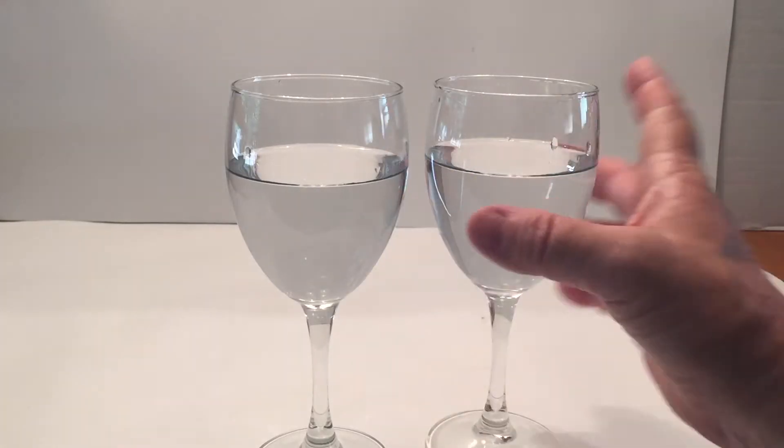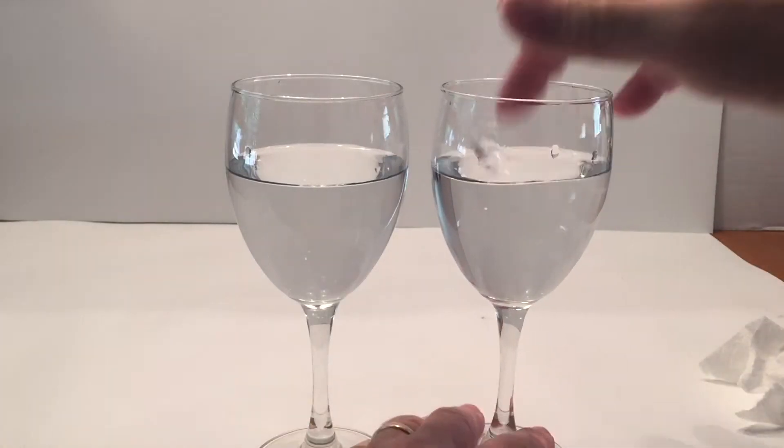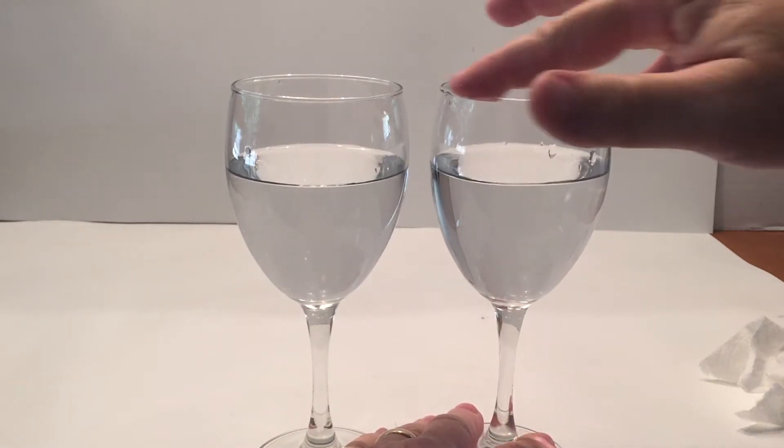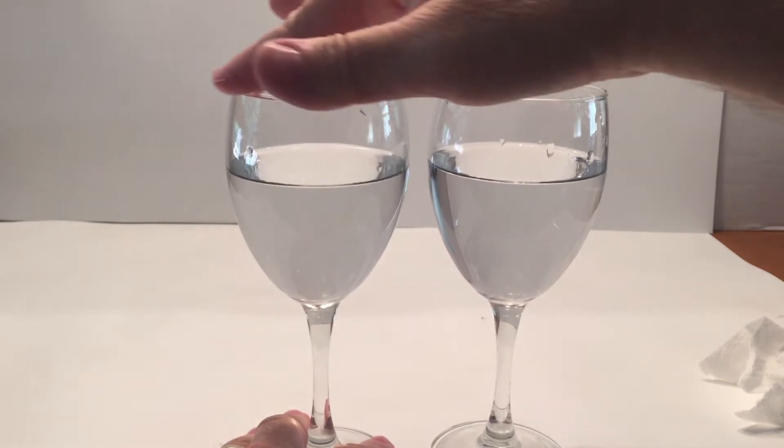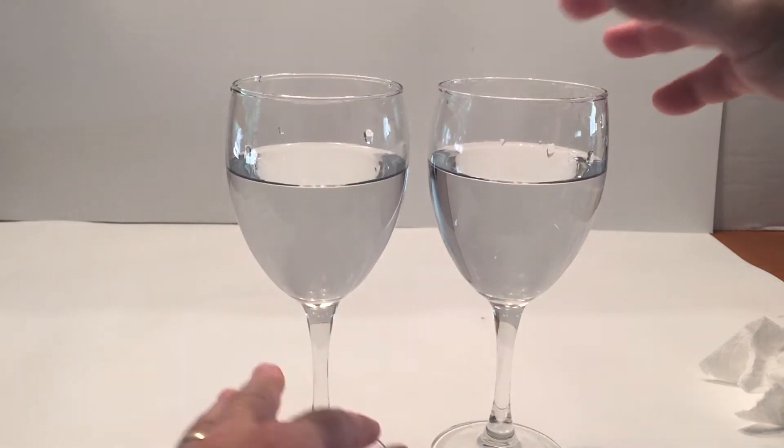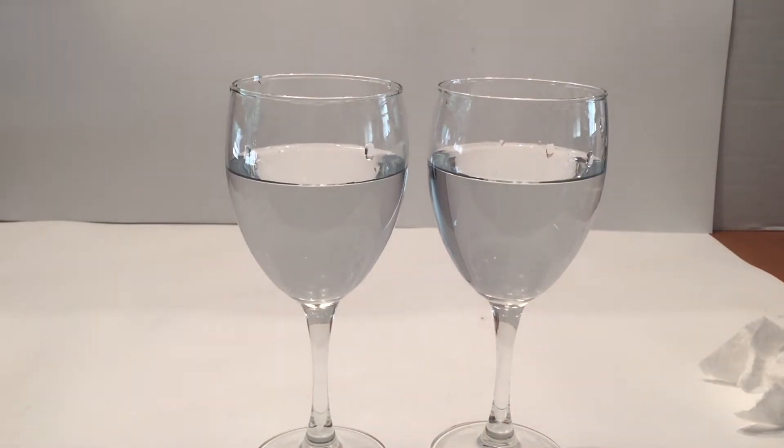To start off this experiment, we're going to try to get the same pitch in the glass. So starting off with the same amount of liquid, dip your finger in and go in a circular motion all the way around on both glasses, and if you hear the same pitch, then you're pretty much set and you're ready to go.